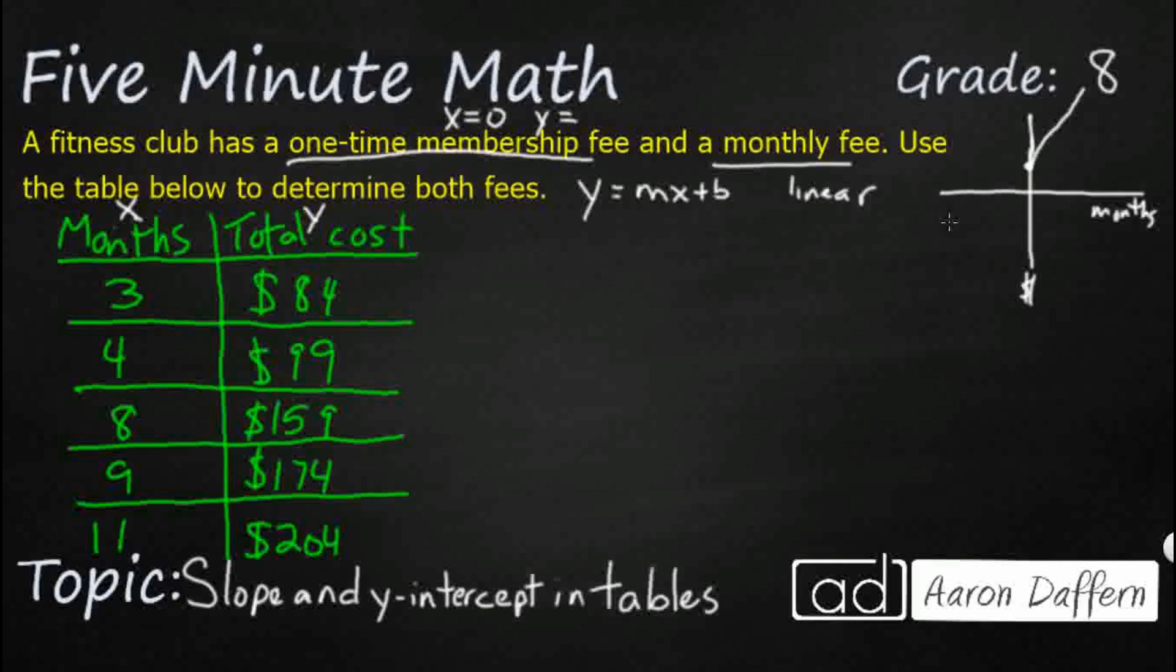So let's see if we can figure out, but there is no month 0. If this table had a month 0, then it'd be super easy. But it starts with month 3. So let's first figure out this monthly fee because that monthly fee is actually going to be your slope. So there's two different ways we can do this.